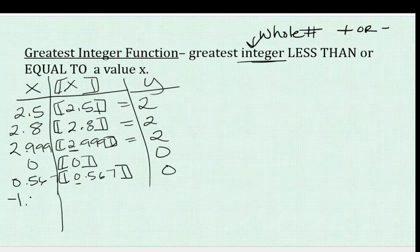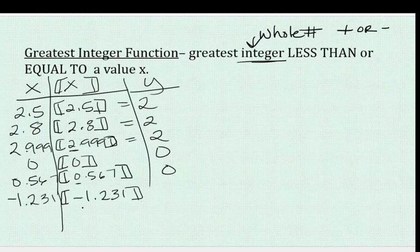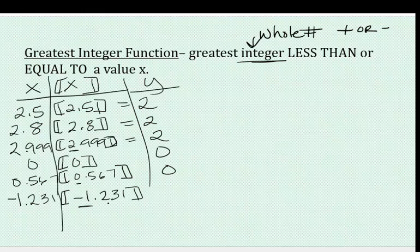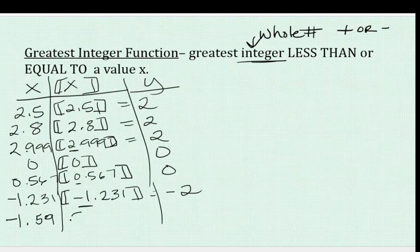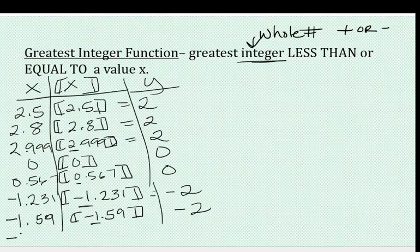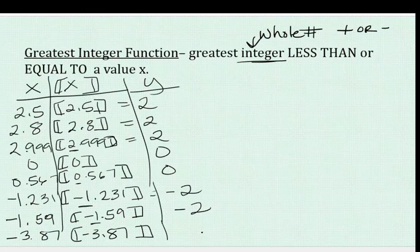What happens if it becomes a negative number — negative 1.231? This is a little tricky. Greatest integer means whole number less than or equal to this value. If I cut it off and say negative 1, think about it — negative 1 is actually greater than negative 1.231. So I want less than or equal to, so it would actually be negative 2. It gets kind of wonky in the negatives. If it was negative 1.59, less than or equal to would make it negative 2. What if it was negative 3.87? The next whole number less than or equal to it is negative 4.